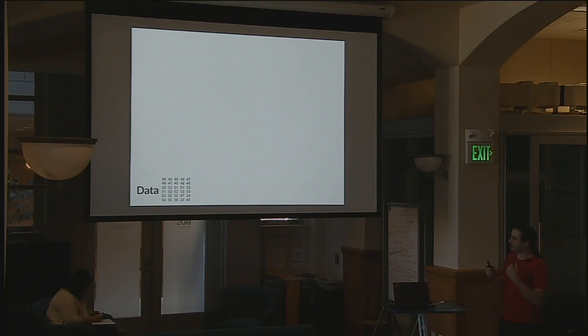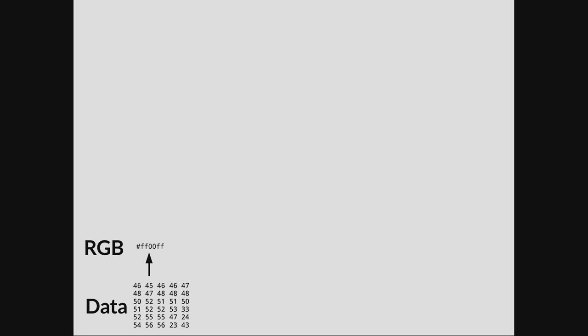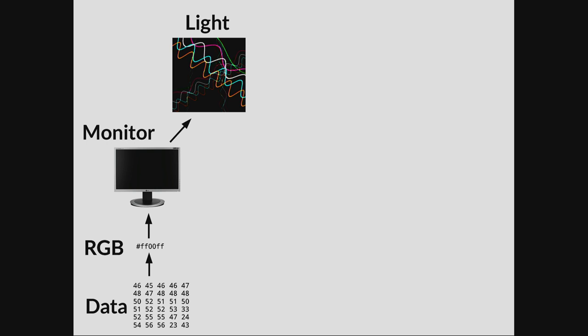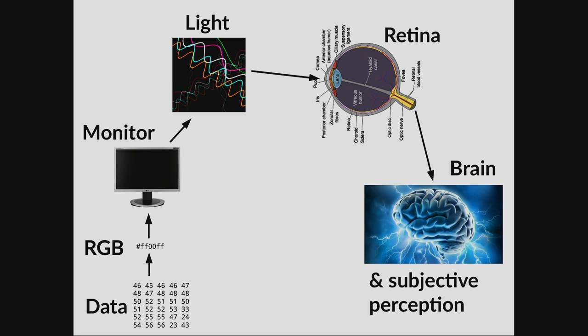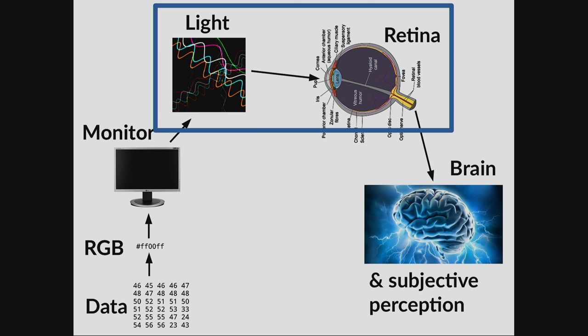Let's start from the basics. If you have some data shown using a color map, each data point gets mapped to an RGB value — a triple of numbers — which gets sent as a signal to your monitor. The monitor spits out photons, those photons hit your eye, go into the lens, hit the retina, which transmutes them into an electrochemical signal sent down a nerve fiber to your brain. Your brain does something with it and turns it into your subjective perception.